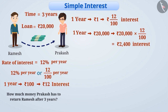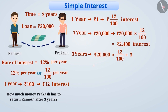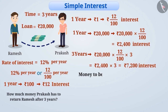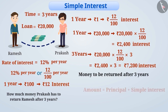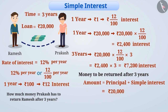Prakash has borrowed money for three years. Therefore, for three years, the interest will be Rs.20,000 multiplied by 12/100 multiplied by 3, which is equal to Rs.2,400 into 3, which is equal to Rs.7,200. Thus, the amount to be returned after three years is Rs.20,000 principal plus Rs.7,200 interest, which is equal to Rs.27,200.